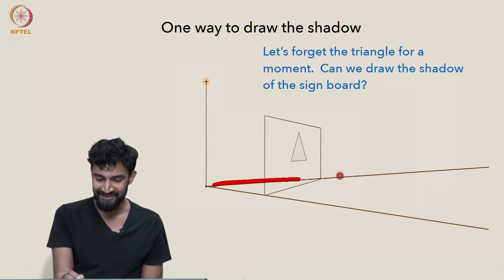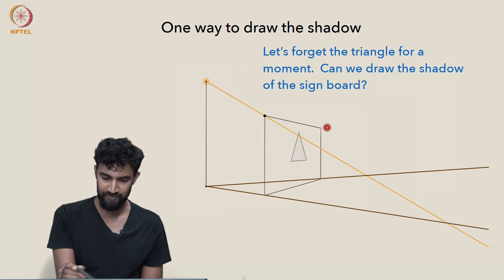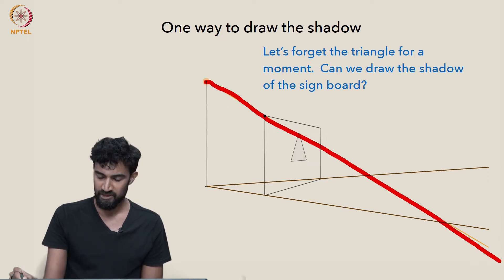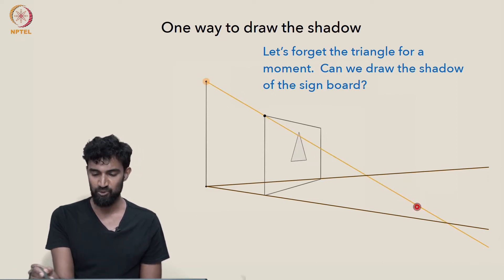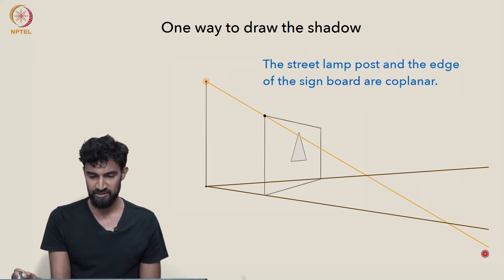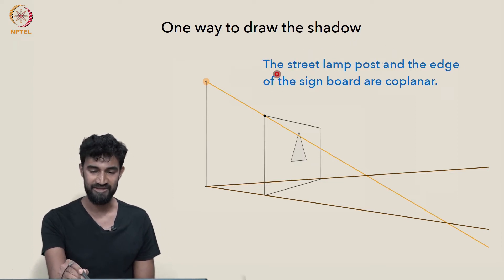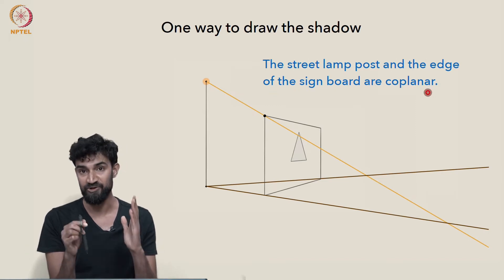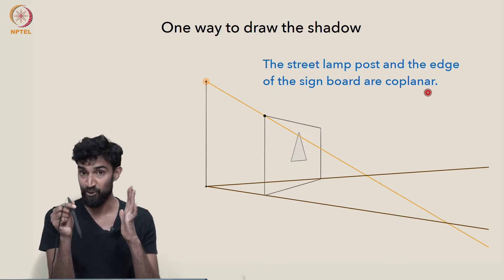So, it has to lie in this kind of cone here. But where do the top corners project to? Well, if we go from the light source to this corner, it's going to be somewhere along this line, but where is it? Now, it's important to notice here that the street lamp post and the edge of the sign board, they're both vertical and they're therefore both coplanar.